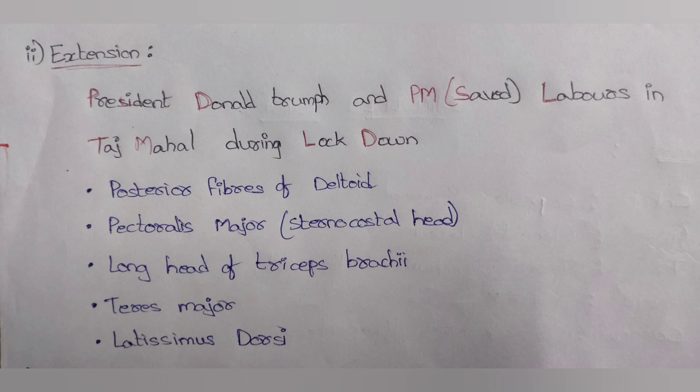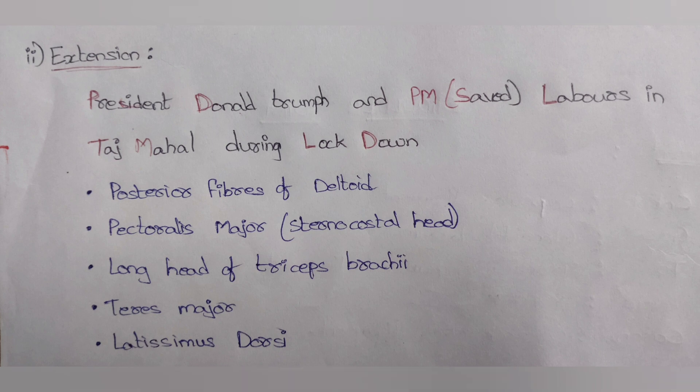For extension: P and D (president Donald Trump) for posterior fibers of deltoid muscle, PM for pectoralis major — in brackets, the sternocostal head — L for long head of triceps brachii, TM (Taj Mahal) for teres major, and LD (lockdown) for latissimus dorsi.